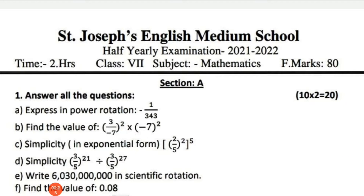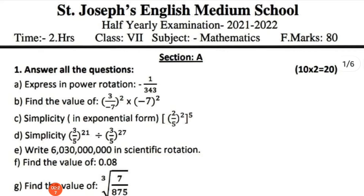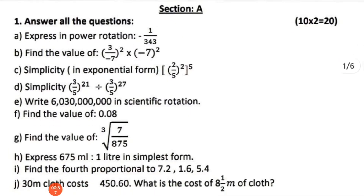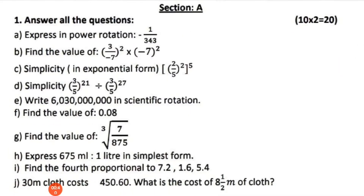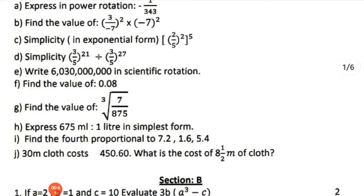The first question: express in power notation — minus 1 by 3, 4, 3. Find the value. The next question: find the value of 3 by minus 7, whole square, into minus 7 whole square. The next question: simplify 2 by 5, square root 5 to the power 5. Simplify 3 by 5 to the power 21 divided by 3 by 5 to the power 27.